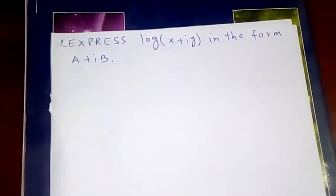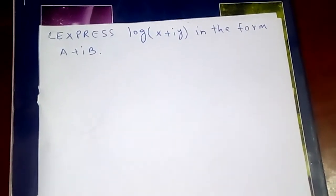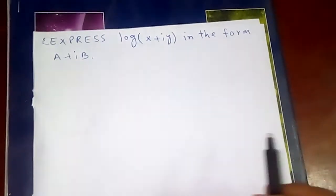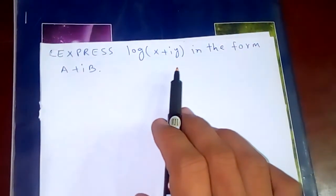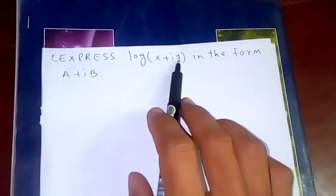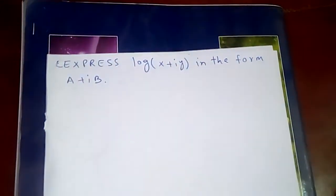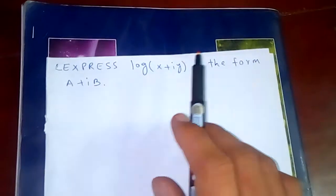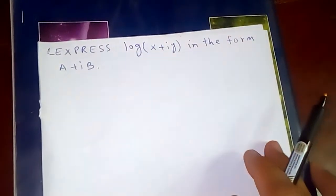Thanks for watching my video today. Let's evaluate this one: express log(x + iy) in the form a + ib. In this log of x + iy, we are going to separate the real part and the imaginary part, where x is the real part and y is the imaginary part because it contains i. This i is nothing but the square root of minus one — that's what we call an imaginary number.